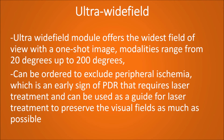Besides studying the posterior pole perfusion of the retina, fluorescein angiography can be used in wide-field mode. Modalities ranging from 20 degrees up to 200 degrees can be ordered to exclude peripheral ischemia, which is an early sign of proliferative diabetic retinopathy that requires laser treatment, and can be used as a guide for treatment to preserve the visual fields as much as possible.